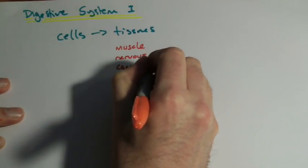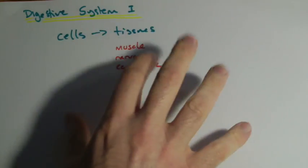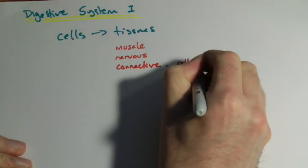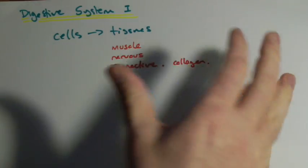You have something called connective tissue. This is the stuff that most of your body is made up of. Have you heard of collagen, which is found in your skin? That's a connective tissue. It holds all your stuff together, all the bits and things.